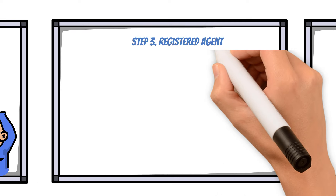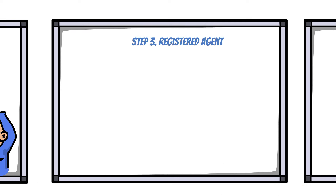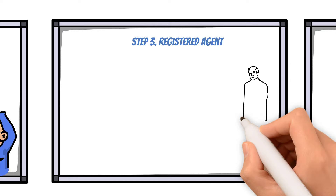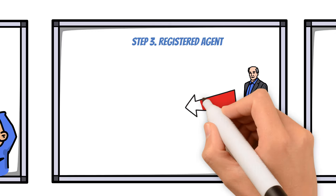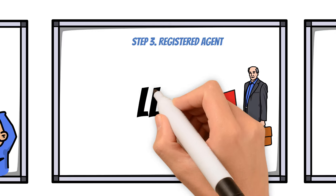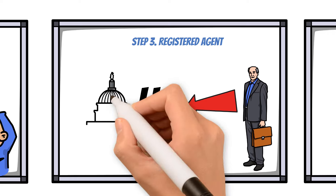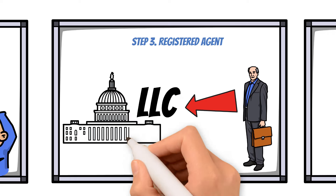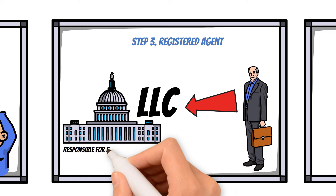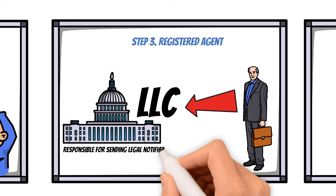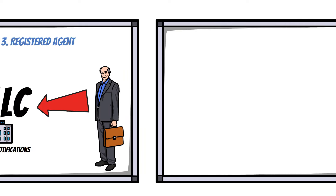Step 3: Registered Agent. Identify and appoint a registered agent who will act as the point of contact between your LLC and the government agencies responsible for sending legal notifications.